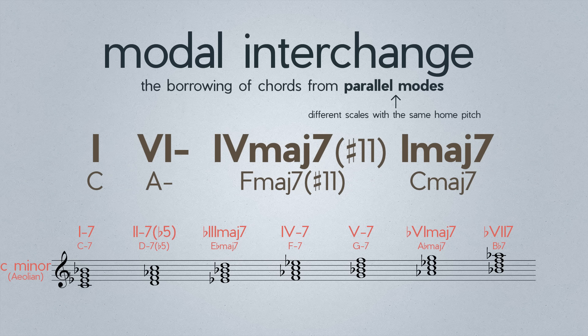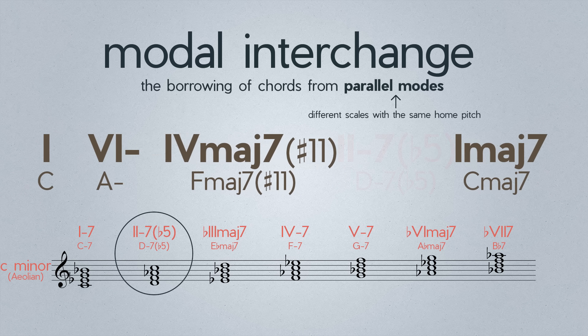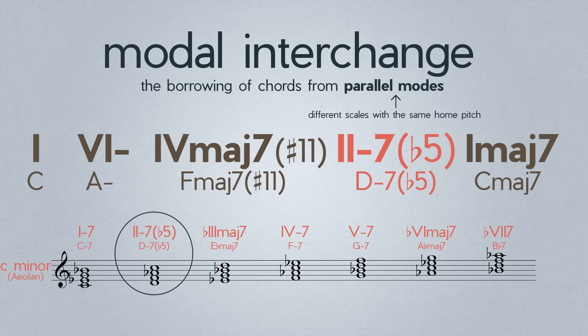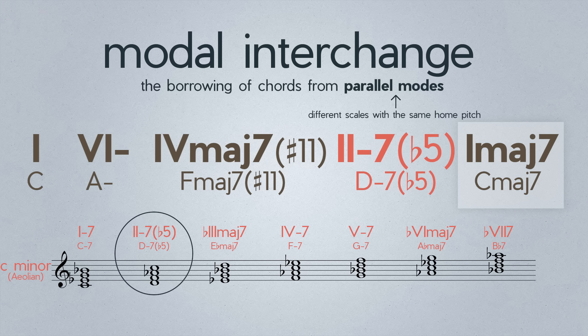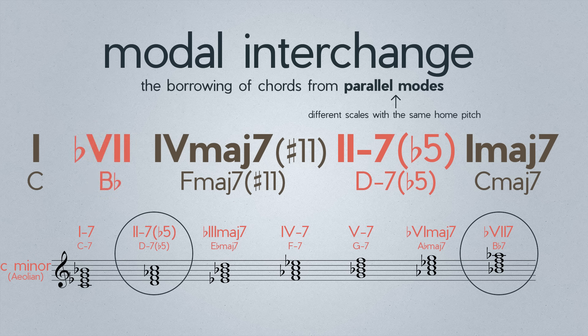So our song is in C major, but how would it sound if we took a chord from the parallel minor and inserted it into our major chord progression? Pretty cool! That IIm7b5 chord injects just a little taste of Aeolian at a specific moment into our progression. And that's just one example. We can get different sounds depending on which chords we borrow, and in what context we put them.